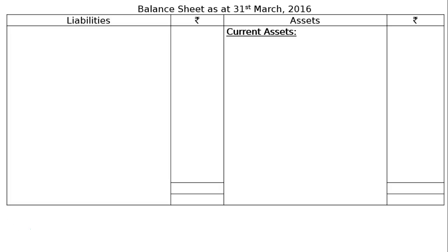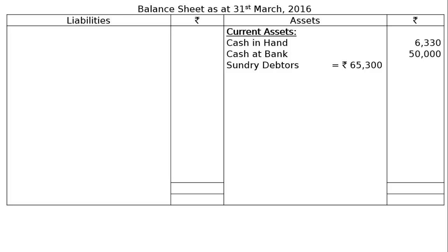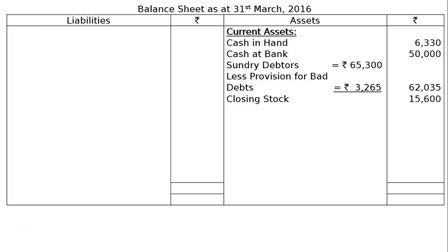The balance sheet is as at 31st March 2016. On the asset side, under current assets: cash in hand Rs. 6,333; cash at bank Rs. 50,000; sundry debtors Rs. 65,300 less provision for bad debts at 5%, that is Rs. 3,265, as per adjustment number 3 — in the final column Rs. 62,035. Next is closing stock Rs. 15,600.